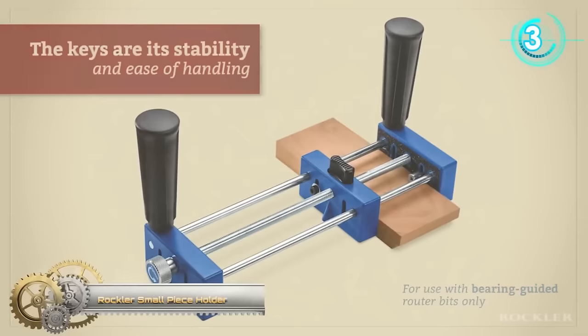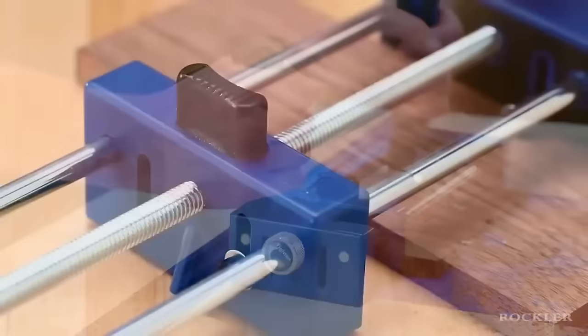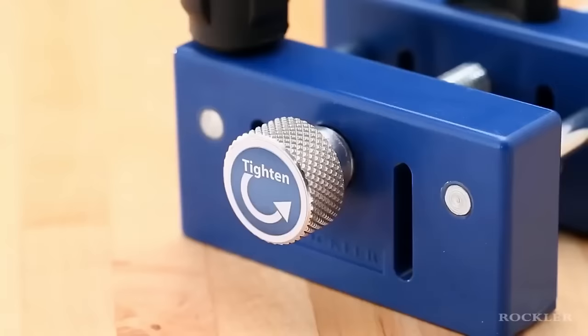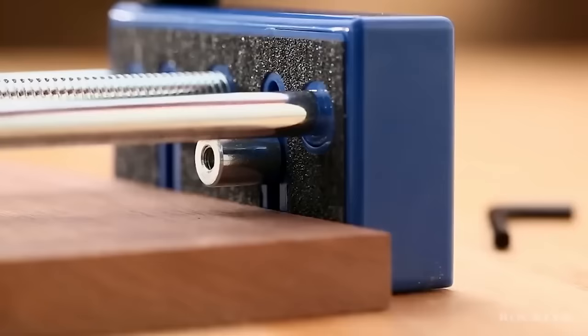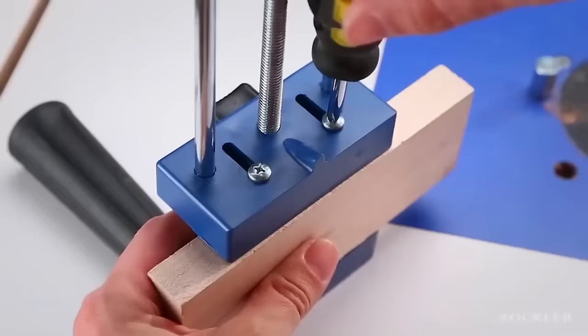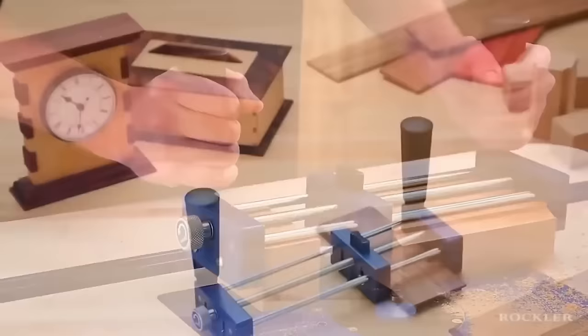The Rockler Small Piece Holder is a versatile and durable tool designed to securely hold small workpieces during machining at the router table. Constructed from heavy-duty steel, it features a quick-release clamp screw for easy operation and two adjustable pins to firmly secure the workpiece against the table. This holder is ideal for a range of projects, including routing small pieces of wood, cutting dados and rabbets, routing edges and profiles, as well as carving and inlaying. It provides a safe and secure way to work with small workpieces, ensuring accuracy and precision in your machining tasks.